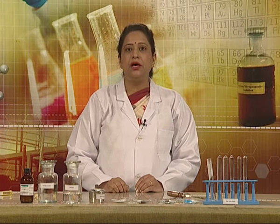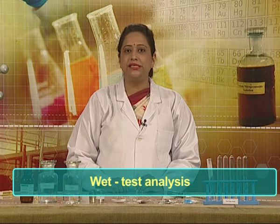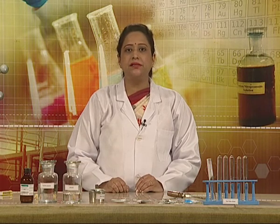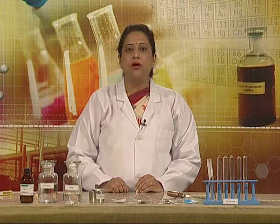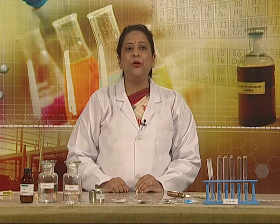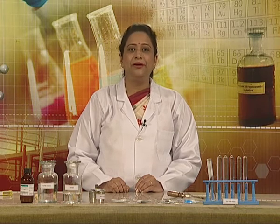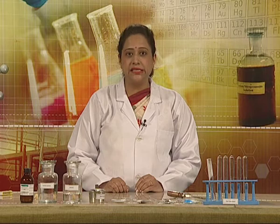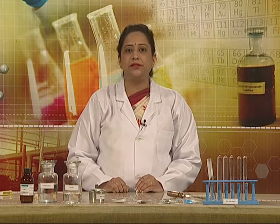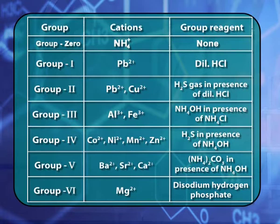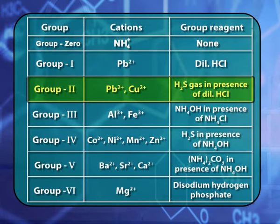The testing of the cation in the solution of salts is known as wet test analysis. Different cations have been divided into groups 1 to 6, based on the solubility products of the salts. However, the ammonium cation is special because it is placed in a separate group — that is group 0 — because it forms soluble salts with all the reagents. The placement of different cations in different groups is shown in the table. Group 0 has the ammonium ion, and group 1 has the lead ion.